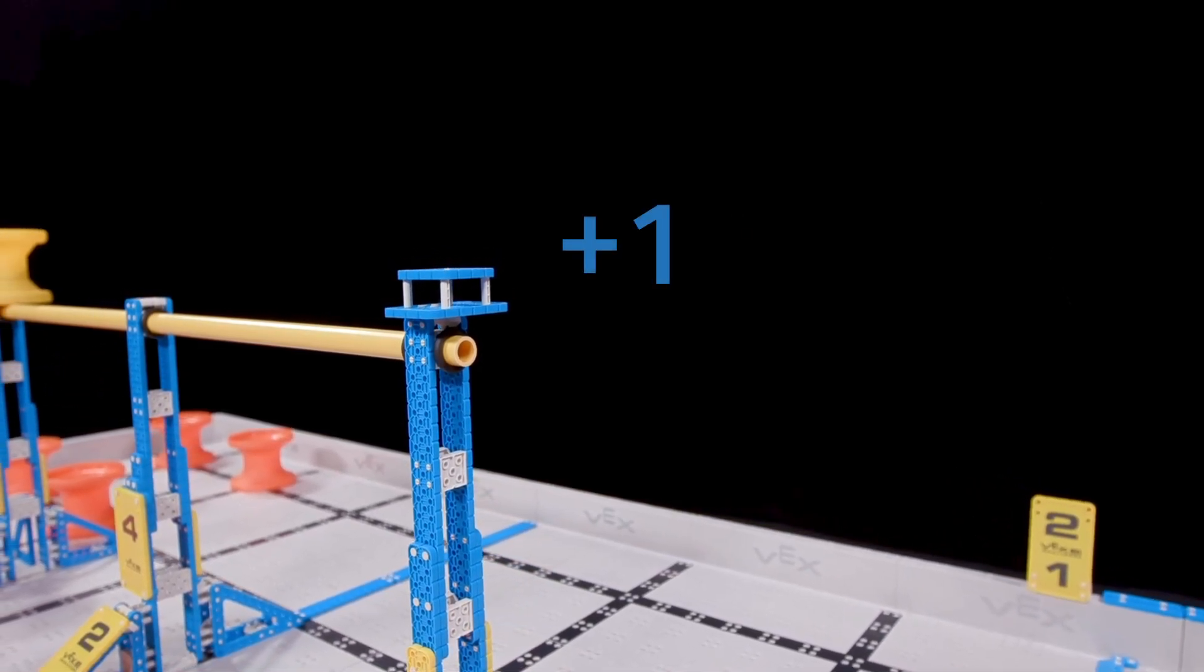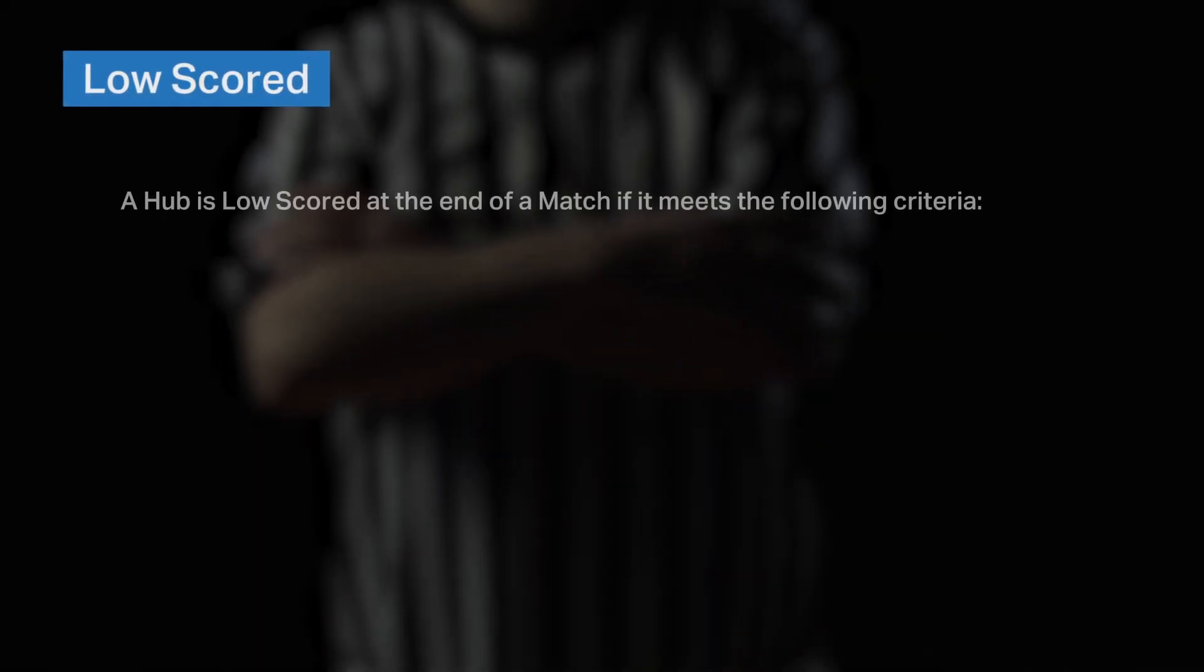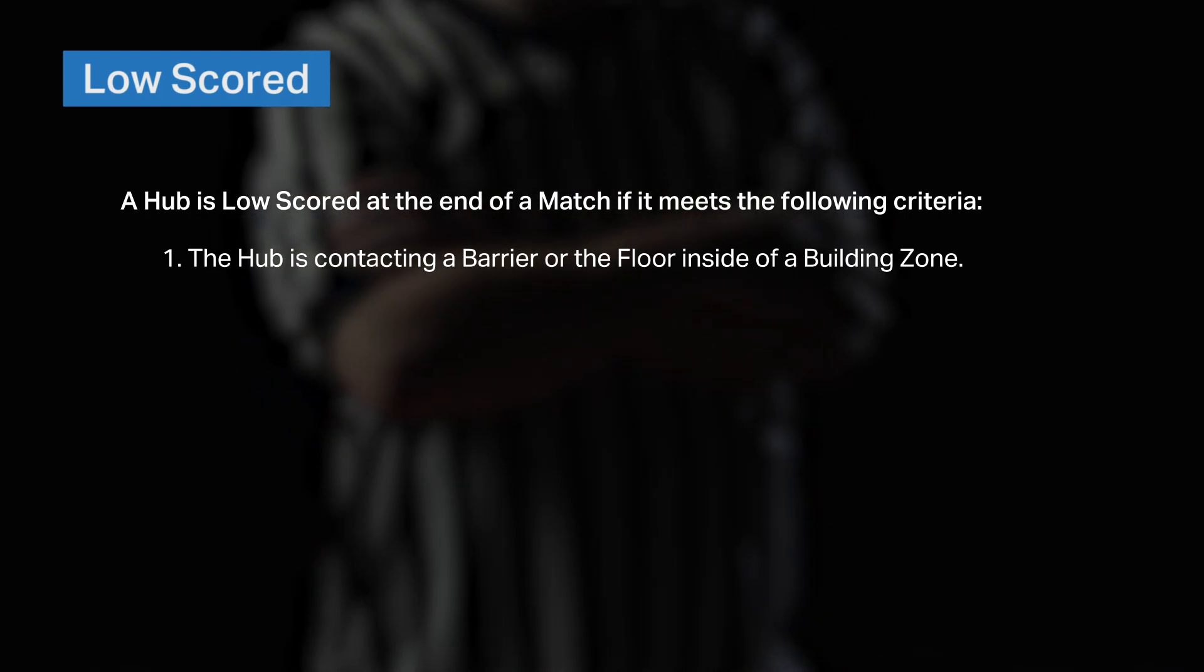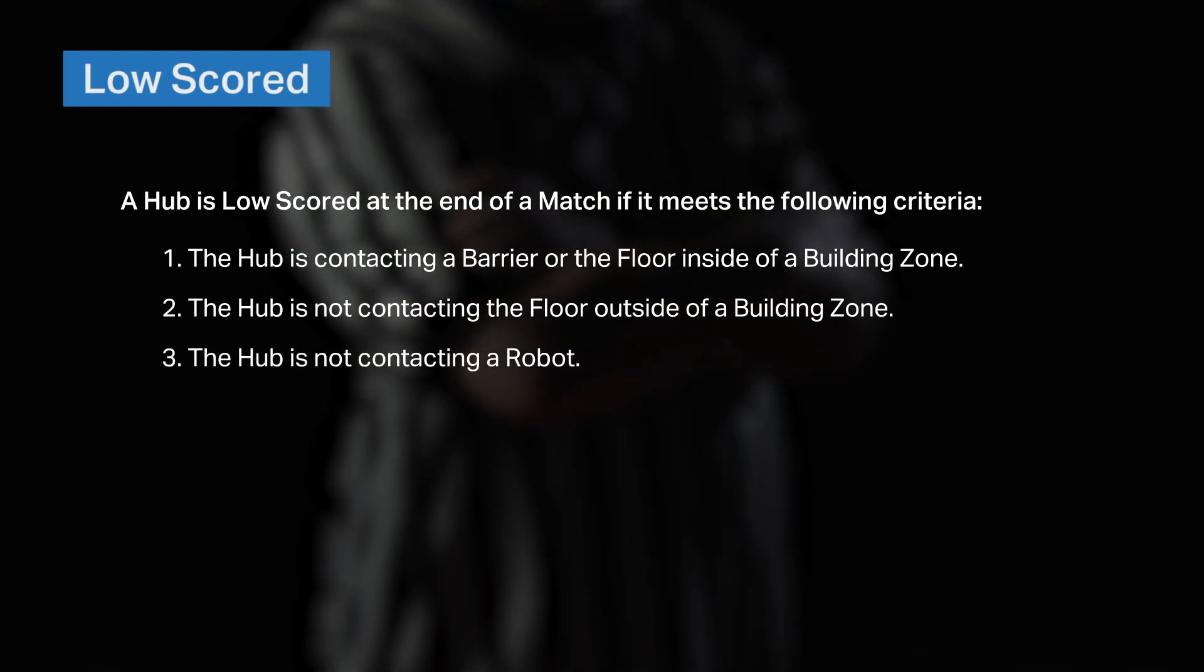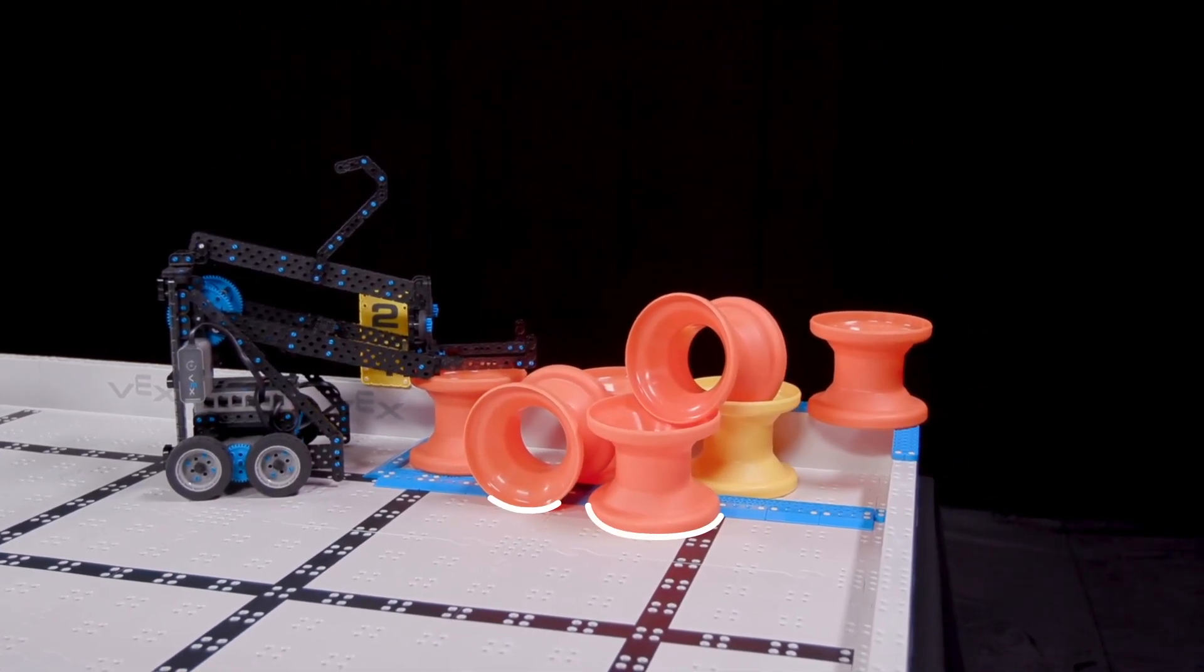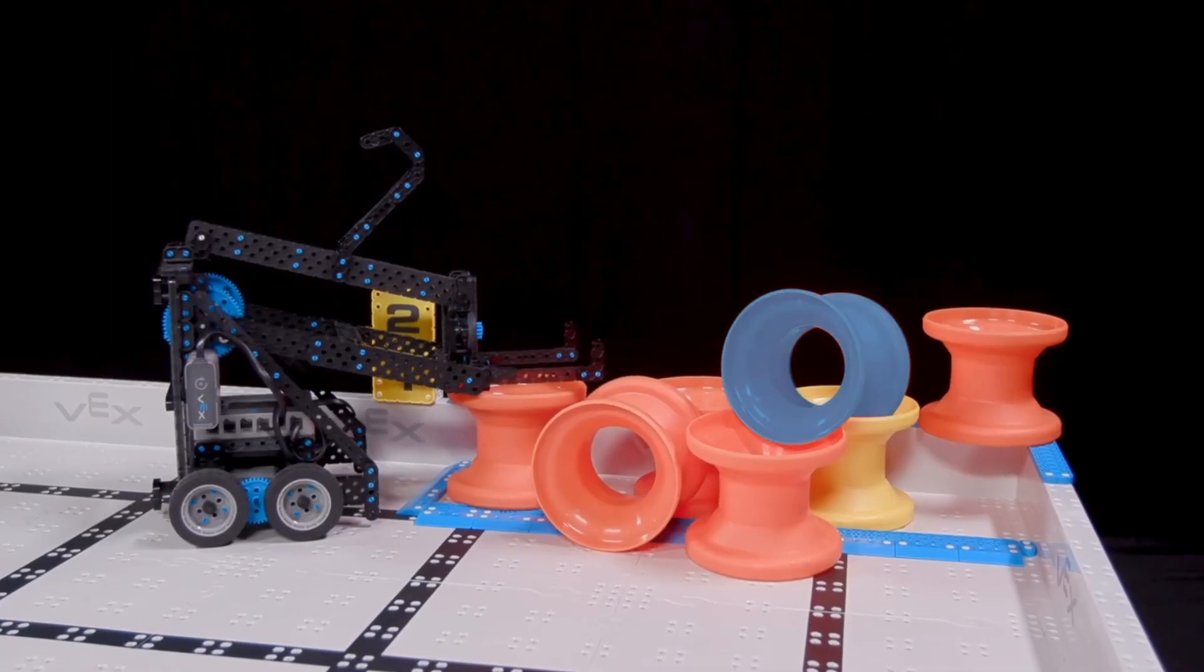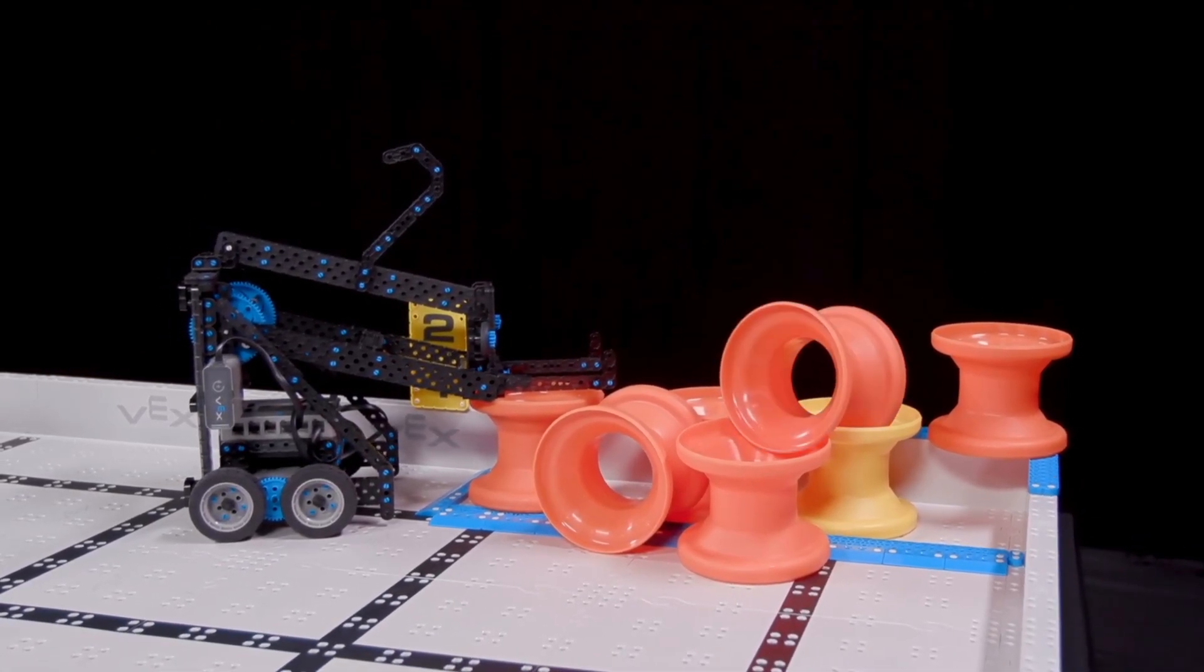Next up is scoring hubs in building zones. Hubs may be low-scored or high-scored in the building zone. Let's step through the definitions for each of these. A hub is low-scored at the end of a match if it meets the following criteria: One, the hub is contacting a barrier or the floor inside of a building zone. Two, the hub is not contacting the floor outside of a building zone. Three, the hub is not contacting a robot. So, in this example, these hubs are considered low-scored. These hubs are not low-scored because they are contacting the floor outside of a building zone. This hub is not low-scored because they are contacting a robot. This hub is not low-scored because even though it's in a building zone, it is not contacting a barrier or the floor. We'll get to this one in a moment.